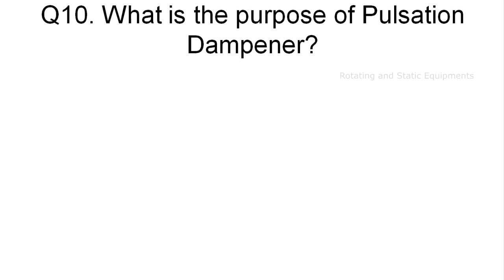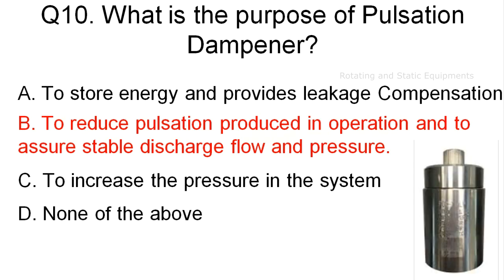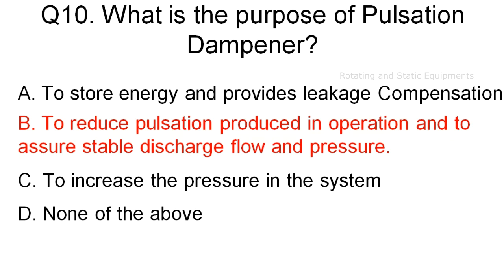Question 10: the correct answer is Option B. The purpose of a pulsation dampener is to reduce the pulsation produced in operation and to assure stable discharge flow and pressure. When liquid pressure falls in the piping system, the pulsation dampener supplies extra pressure to the discharge between pump strokes by displacing liquid by means of diaphragm movement. The pulsation dampener serves to reduce pulsation in operation and assure stable discharge flow and pressure.